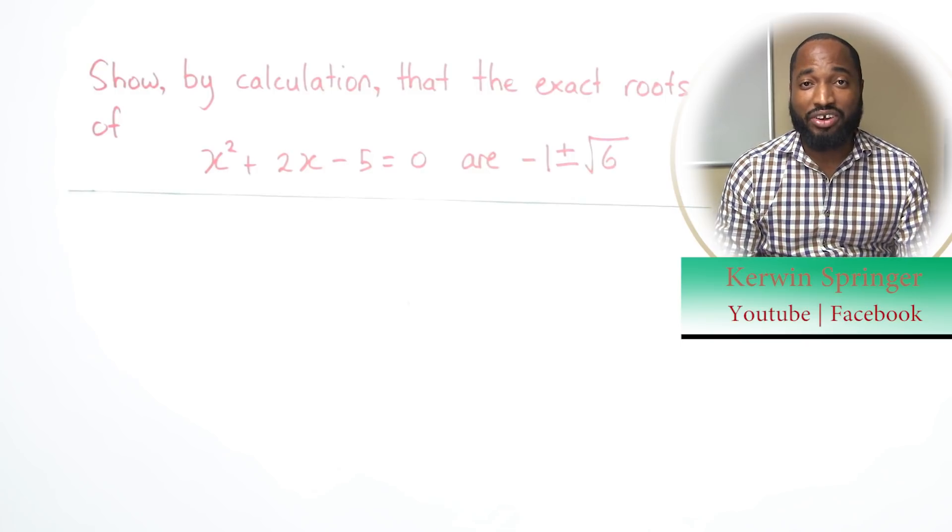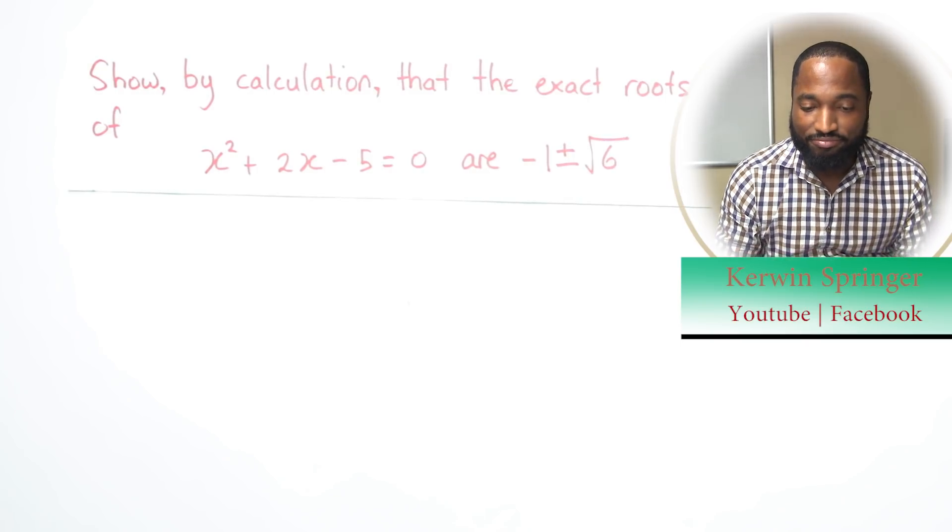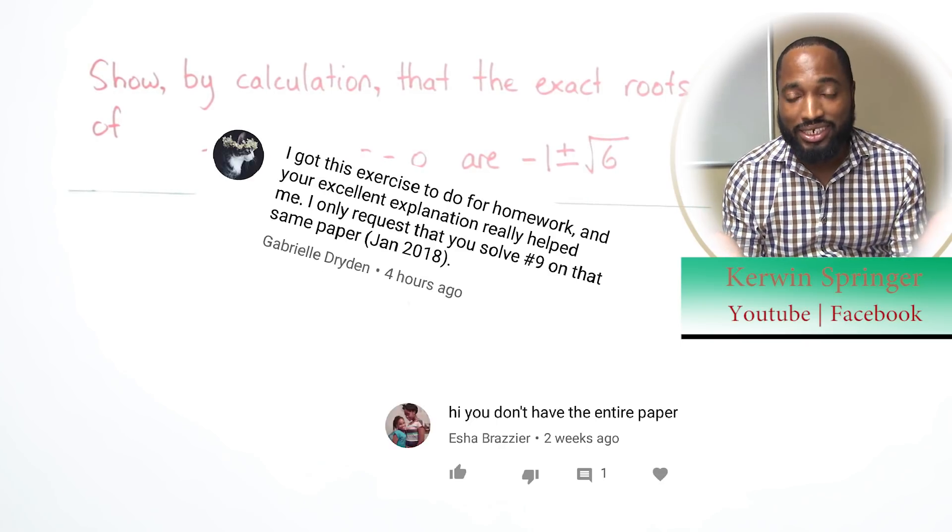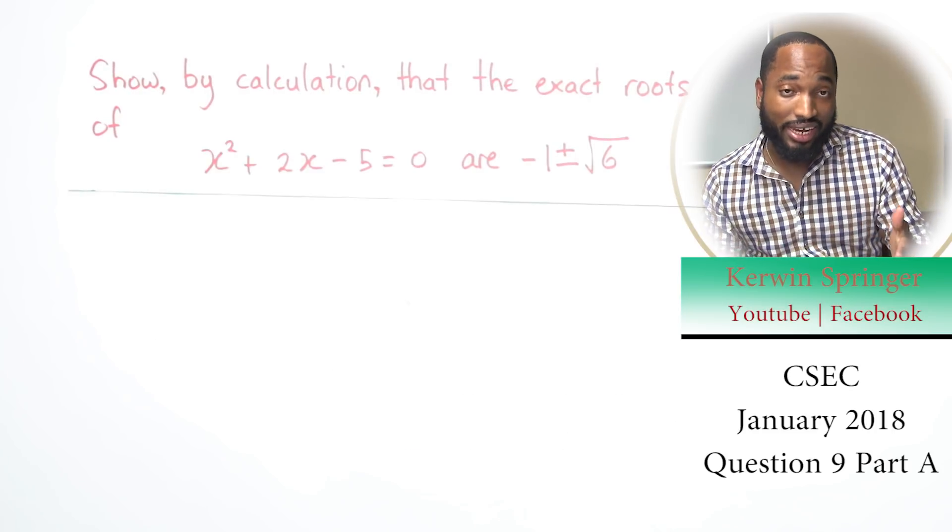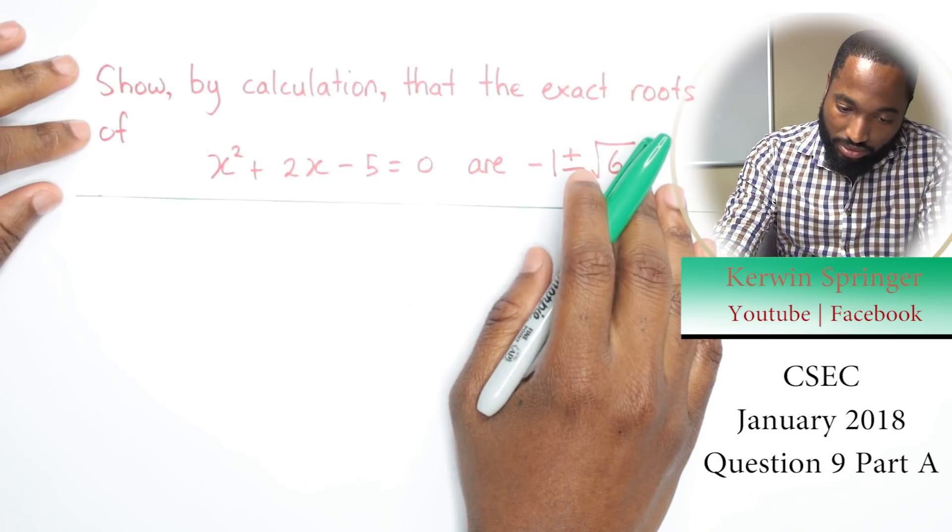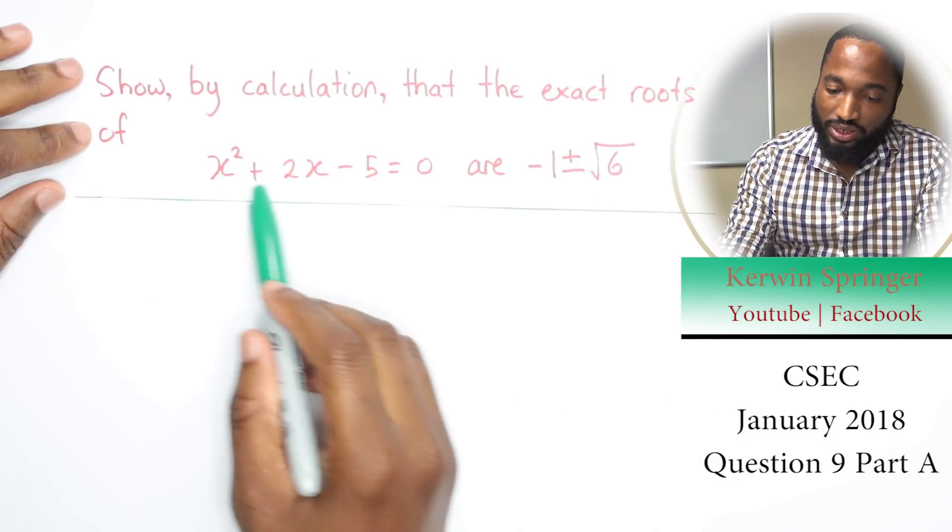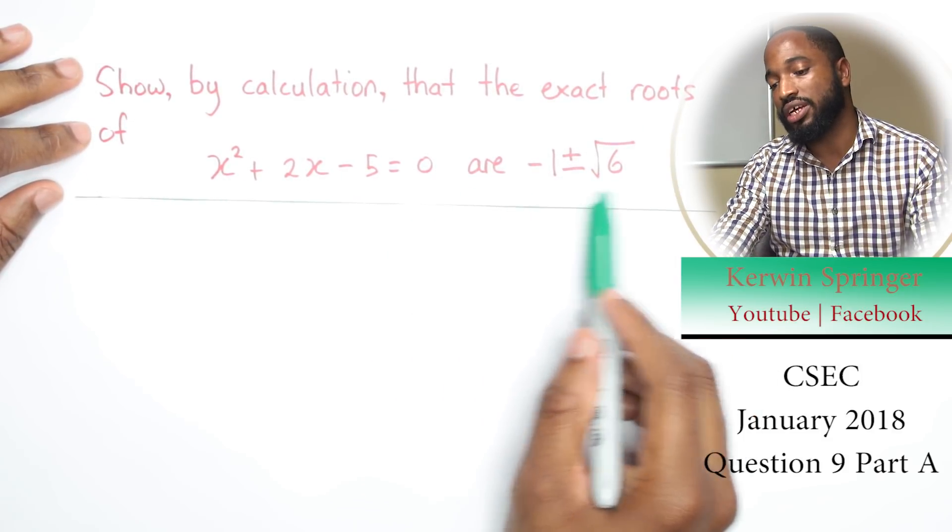All right, so we had a number of people ask it in January 2018. These people asked that, so we got to give the people what they want, right? So this is question 9 we asked before. Show by calculation the exact roots of x squared plus 2x minus 5 equals 0.